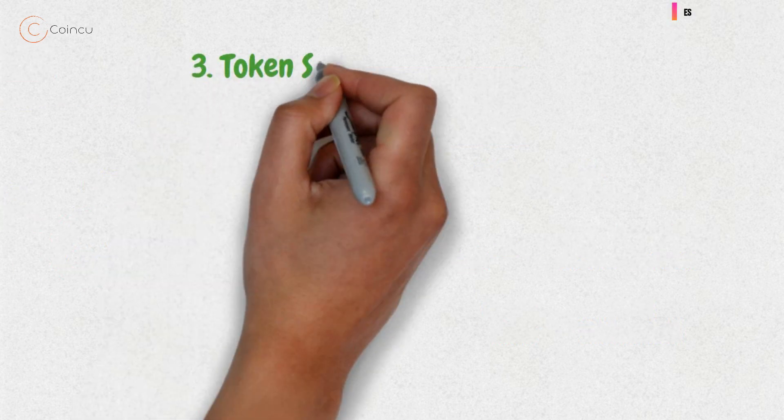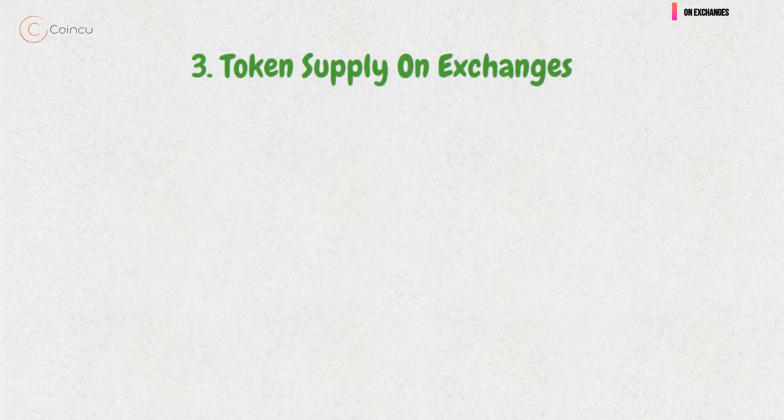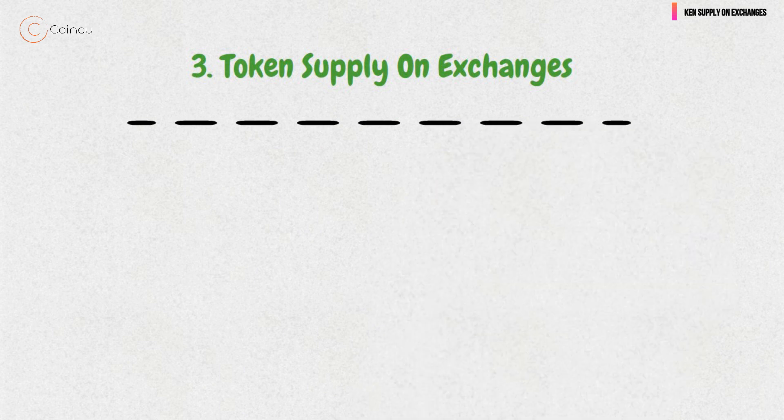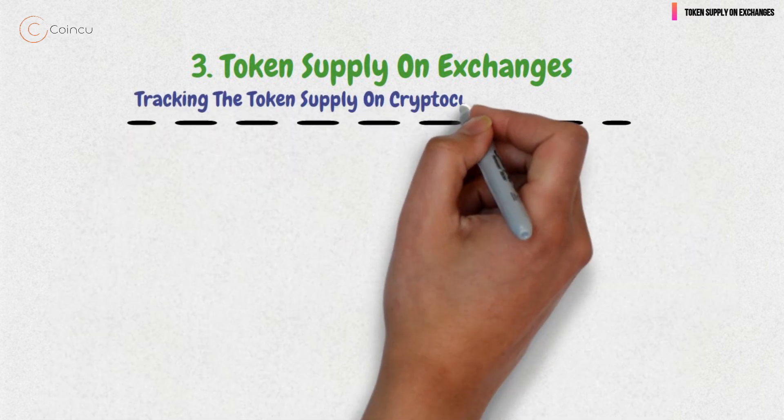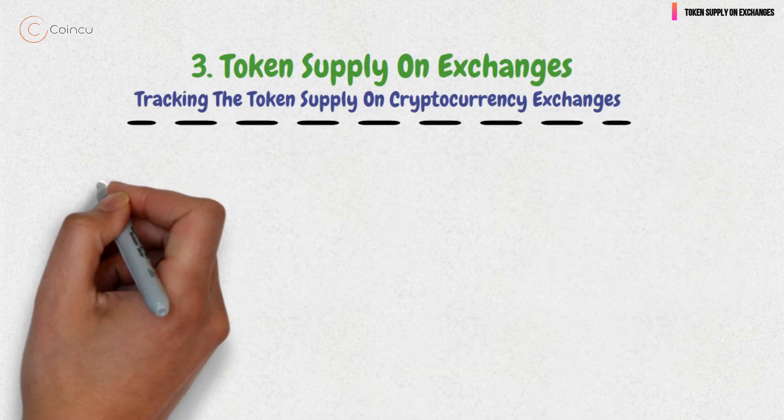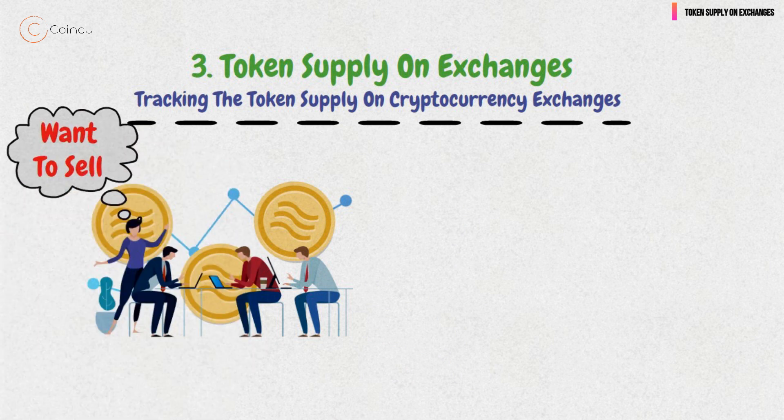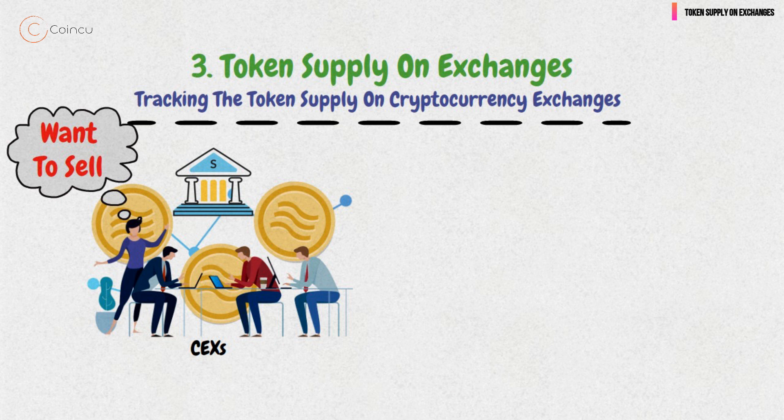3. Token Supply on Exchanges. Another strategy involves tracking the token supply on cryptocurrency exchanges. When sellers want to sell their tokens, they usually do so on centralized exchanges, CEXs.